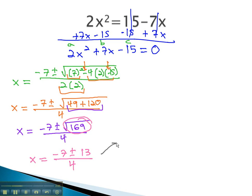We can find our two solutions by splitting into the two equations, where we add and subtract. Negative 7 plus 13 is 6 over 4, and negative 7 minus 13 is negative 20 over 4. These will reduce to our final answers, 3 halves and negative 5.